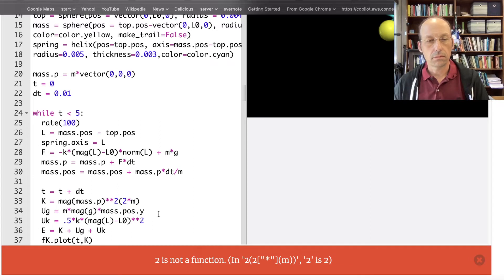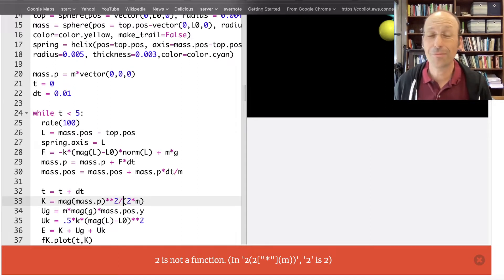Mag mass dot P squared. Oh, divided by. See? I told you something bad was going to happen. But I can fix it.